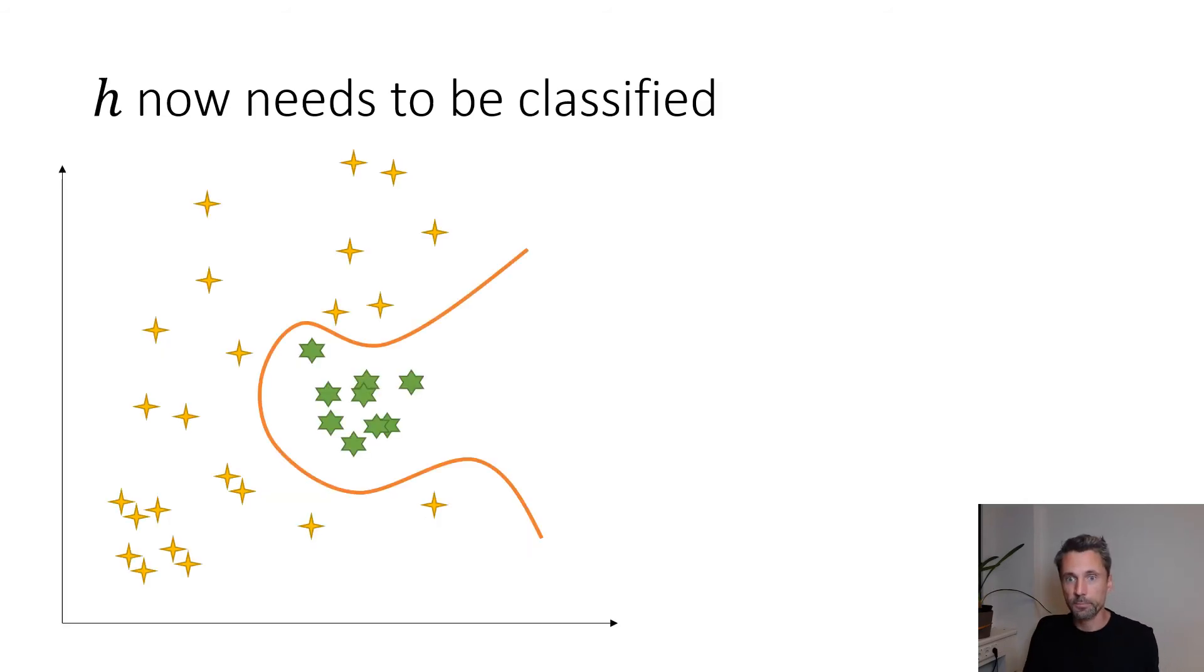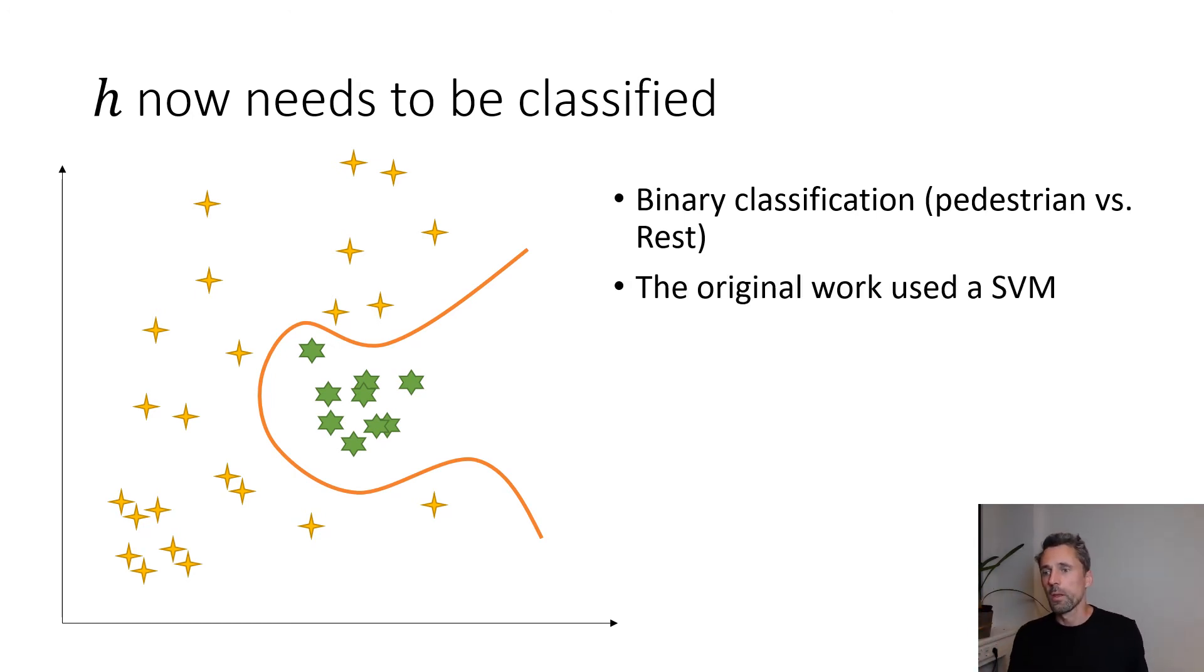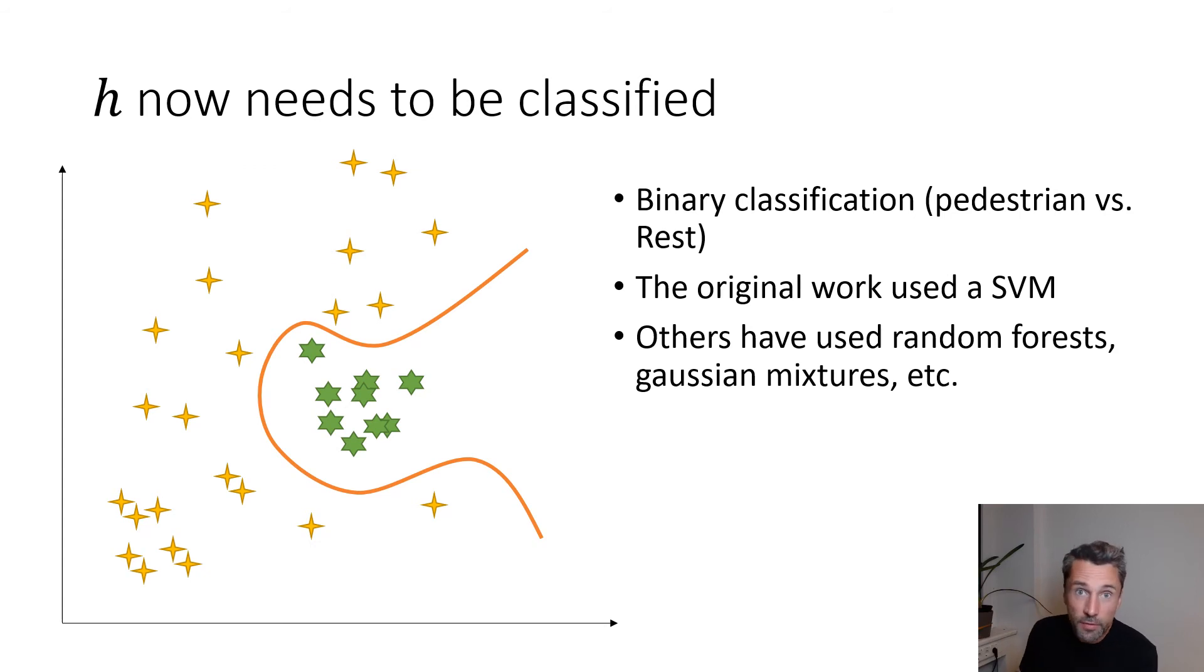h needs to be classified. We'll obviously do a binary classification - we'll try to discriminate pedestrians from non-pedestrians. In the original paper they used a support vector machine. If you don't know what an SVM is, don't worry - we'll do something much simpler in the exercises, maybe not as good, but there are other ways. HOG doesn't really tell you what to do; you can use whatever you want, whatever you like, whatever you have a preference for. Others have used different classifiers: random forests, Gaussian mixture models, and many more.